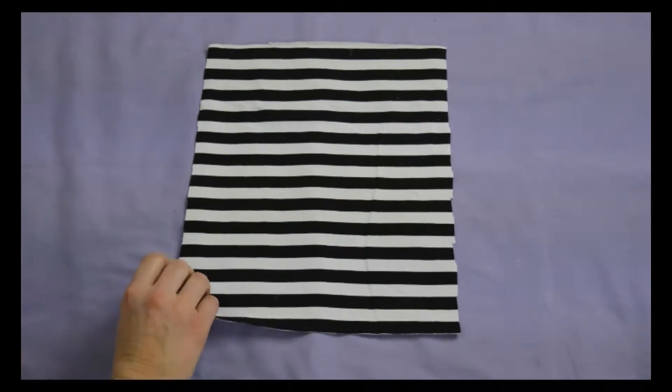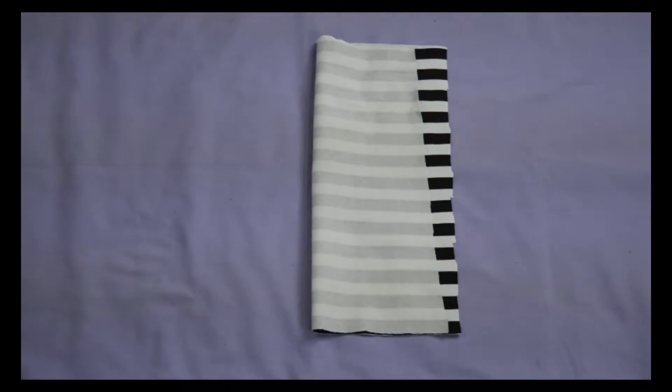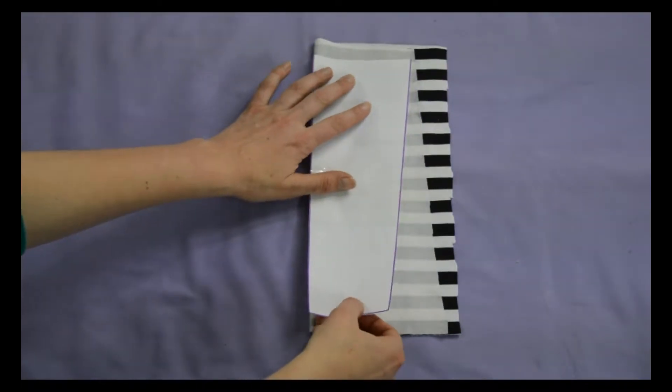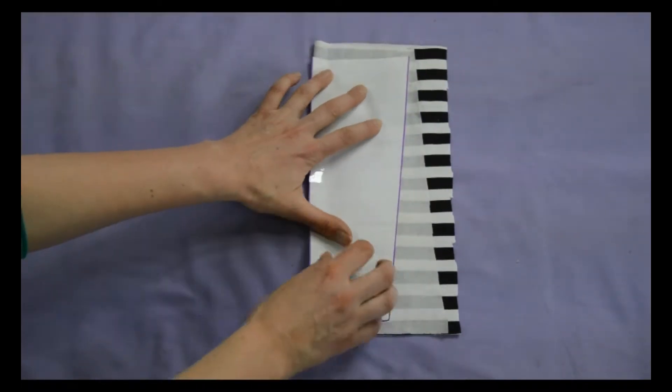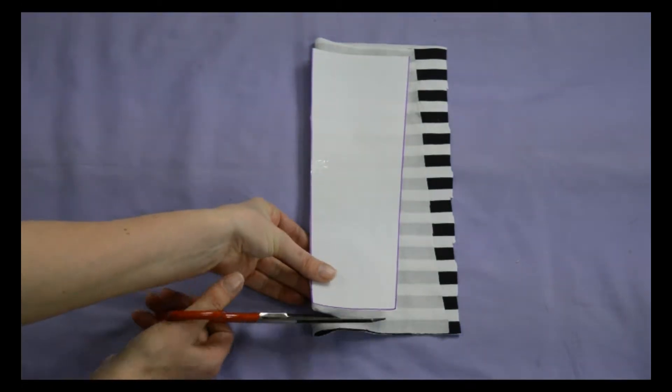Take your fabric and fold it in half. Place your pattern so the straight edge is along the fold. Pin the pattern in place and cut out your arm warmer.